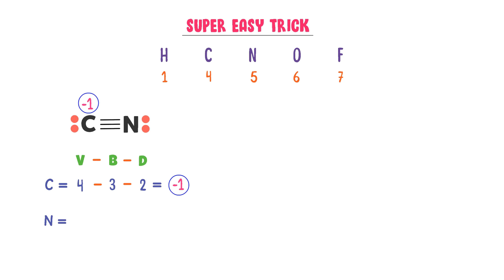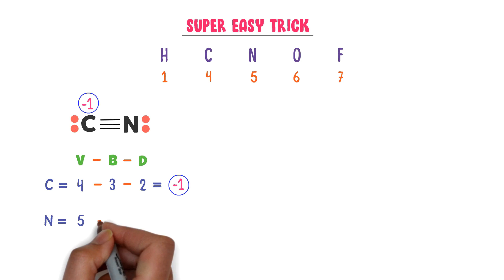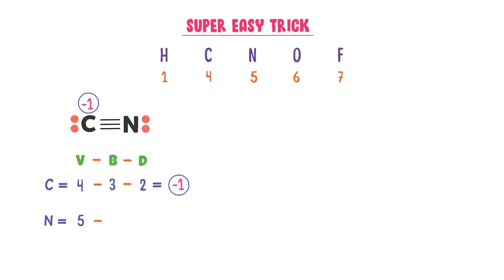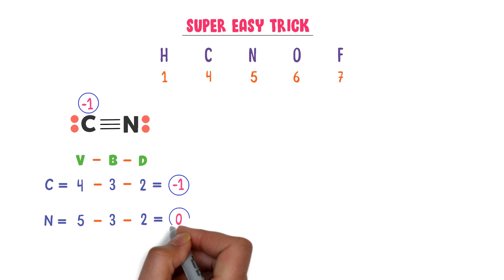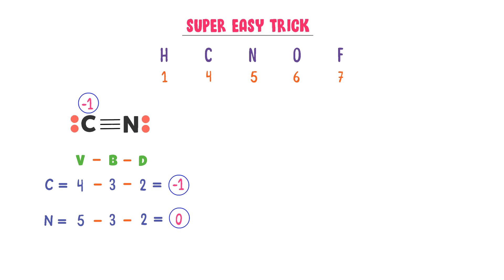Now coming to the nitrogen atom. Again we use the trick: V minus B minus D. The valence of nitrogen is 5, minus the total number of bonds formed by the nitrogen atom — 1, 2, 3 — so nitrogen also forms 3 bonds, minus the total dots on nitrogen — 1, 2 — so there are two dots. After calculation, I get 0. So the formal charge on nitrogen atom is 0. Thus using this trick, we can easily calculate formal charge on any atom in a molecule.